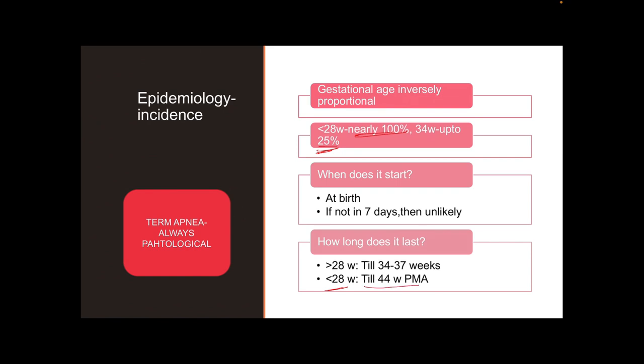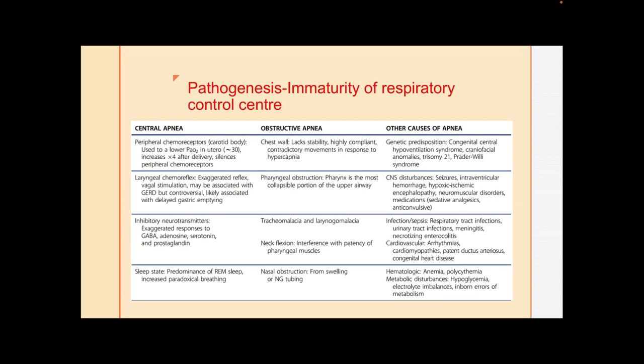Duration also depends on gestational age. Very preterm infants less than 28 weeks can have apneas until 44 weeks post-menstrual age. Slightly more mature babies — more than 28 weeks — have apneas lasting until 34 to 37 weeks post-menstrual age. It is important to know this duration so you can continue caffeine through the risky period.